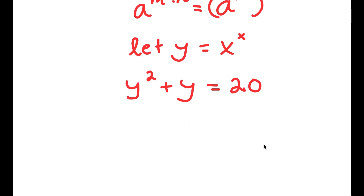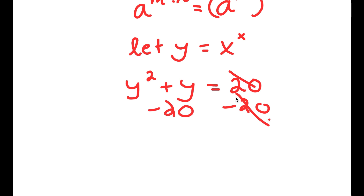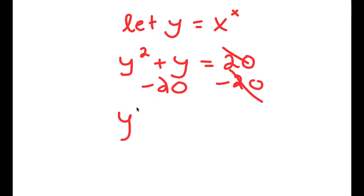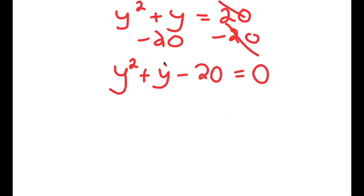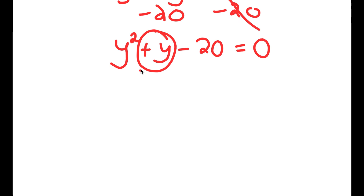From here, I'm going to subtract 20 on both sides. So these two cancel out and I'll be left with y squared plus y minus 20 is equal to 0.